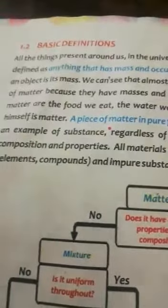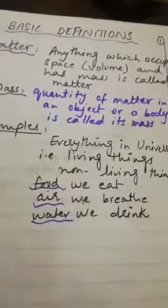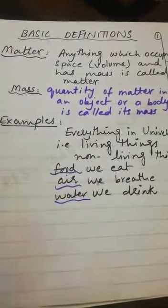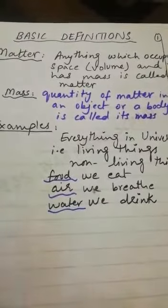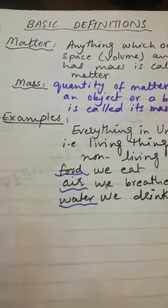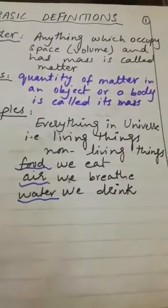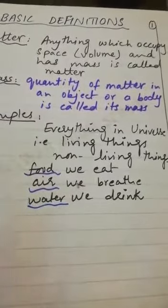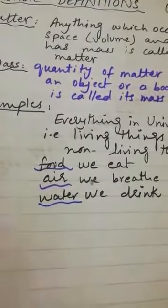We are starting with the definition of matter. Anything which occupies space — occupies space means having volume — and has mass is called matter. Mass is defined as the quantity of matter in an object or a body; it is the definite quantity of matter contained within it.